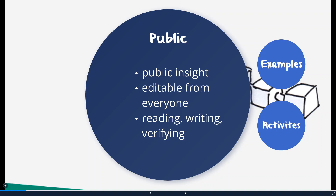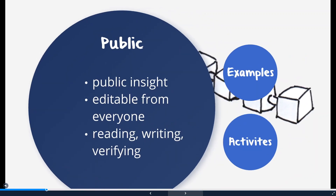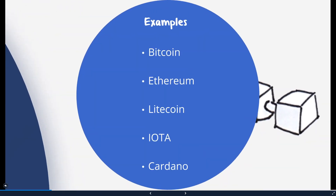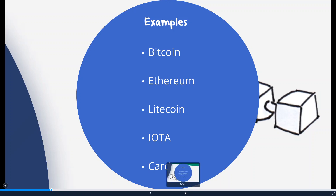Let's look at some examples of public blockchains. We have Bitcoin, Ethereum, Litecoin, IOTA, and Cardano — but of course there are many more out there which weren't covered here.